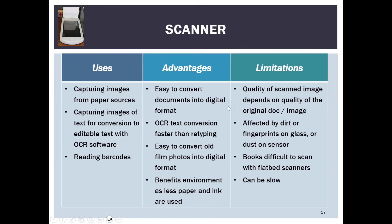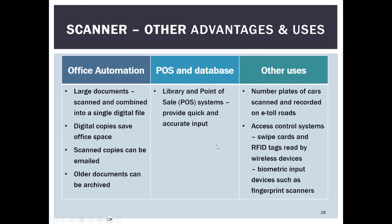For scanners, the quality of the scanned image is affected by dirt or fingerprints on the glass, books can be difficult to scan, and scanning can be slow. For office automation, large documents can be scanned and combined into a single digital file, digital copies can save office space, scanned copies can be emailed, and older documents can be archived. In a point-of-sale system, a barcode scanner provides quick and accurate input. Other uses include scanning number plates and access control systems.